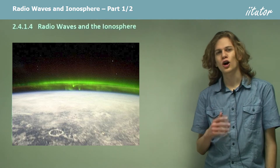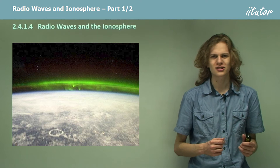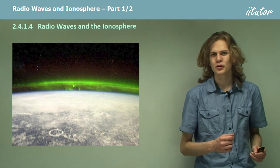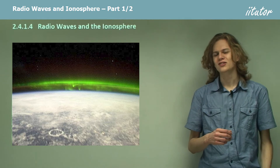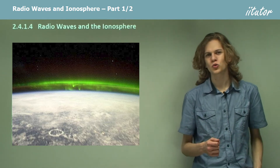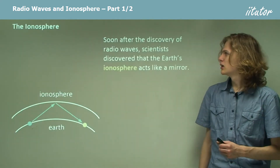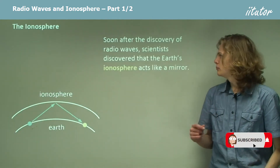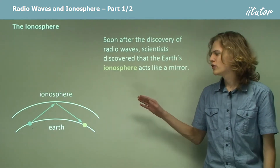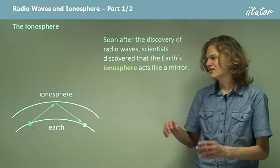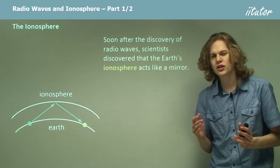The ionosphere is one of the higher layers of the Earth's atmosphere. We get pretty interesting electrical effects occurring in the ionosphere because it's a part of the atmosphere that's electrically conductive. Now, soon after radio waves were discovered, scientists discovered that we could bounce radio waves off the sky. It turns out that it's the Earth's ionosphere that is acting like a mirror for these radio waves.